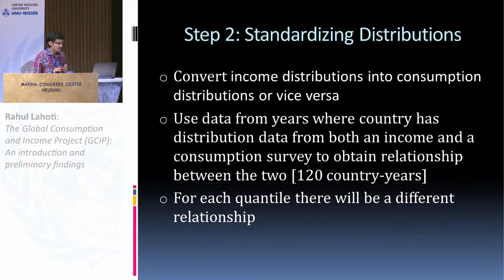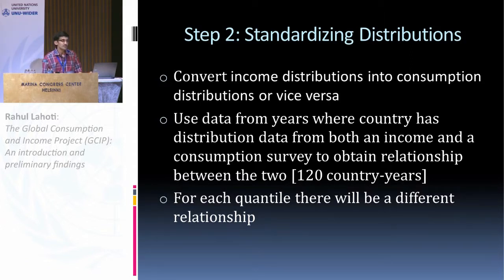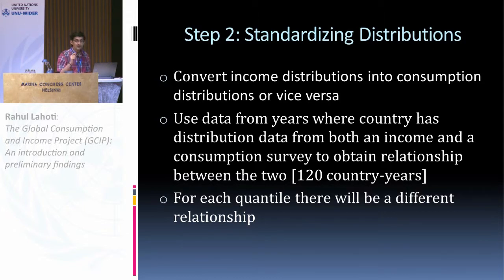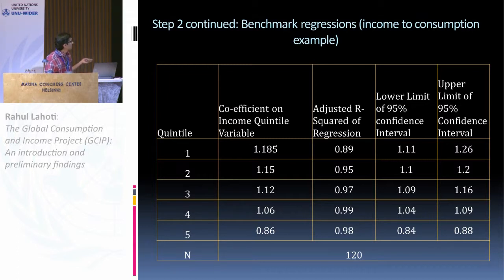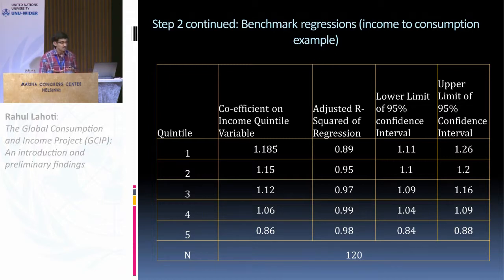In the second step, we convert income distributions to consumption for our GCD database and vice versa for the other database. WID has around 120 country-years which have both a consumption survey and income survey for the same country and year. We use that to get a relationship at the quintile share level — for each quintile we run a regression and get a relationship of how the shares are related. For the bottom quintile, the consumption share comes out to be 1.85 times the income share, whereas in the top quintile it is the reverse: the consumption share is 0.86 times the income share. This is a univariate regression. We tried other alternative specifications but found this worked best. R-squares are pretty high and confidence intervals are low, so we are fairly confident of these results.